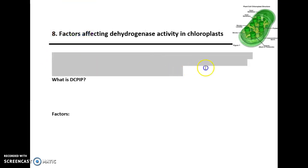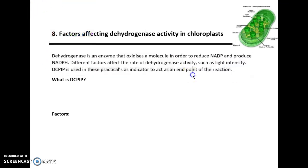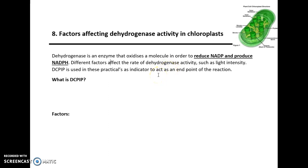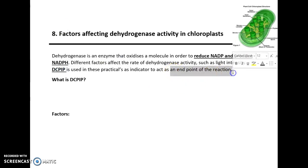Dehydrogenase is an enzyme that is used to reduce NADP to produce NADPH, and this occurs in the light-dependent reaction. Different factors affect the rate of dehydrogenase activity, such as light intensity, and we use DC-PIP as an indicator to see the end point of this reaction.